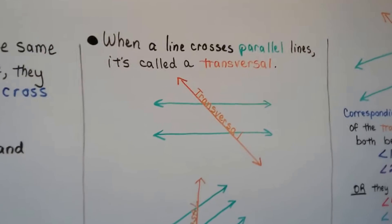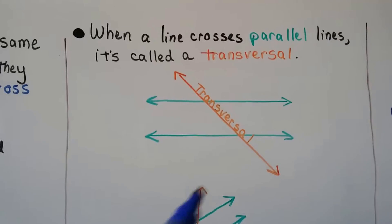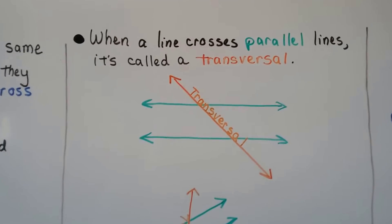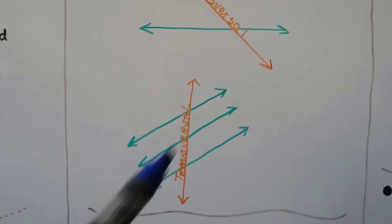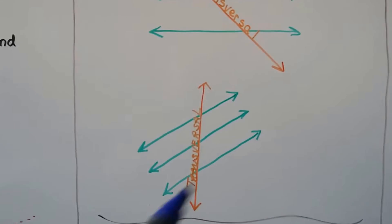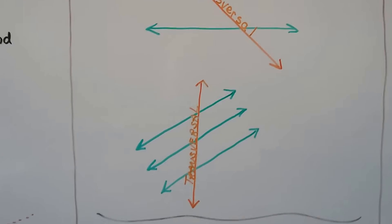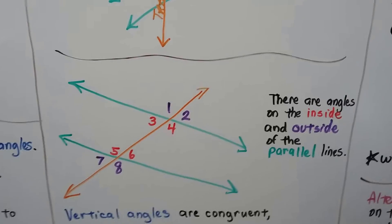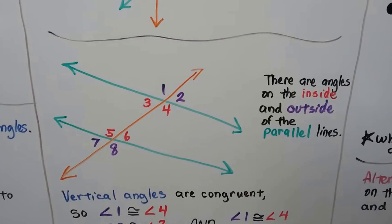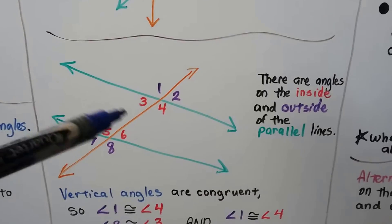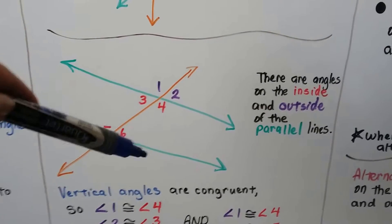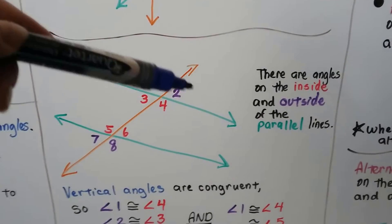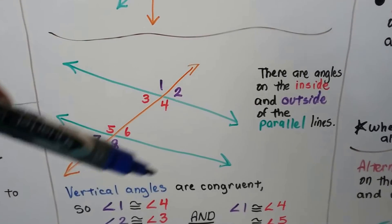When a line crosses parallel lines, it's called a transversal. Here we've got these green parallel lines, and the orange one is the transversal that's cutting through them. We can also have three parallel lines — it doesn't have to just be two. The transversal is cutting through these lines, and there are angles on the inside and outside of the parallel lines. The inside ones are in red, inside the two green lines, and the angles on the outside of the green lines are in purple: one, two, and seven, eight.